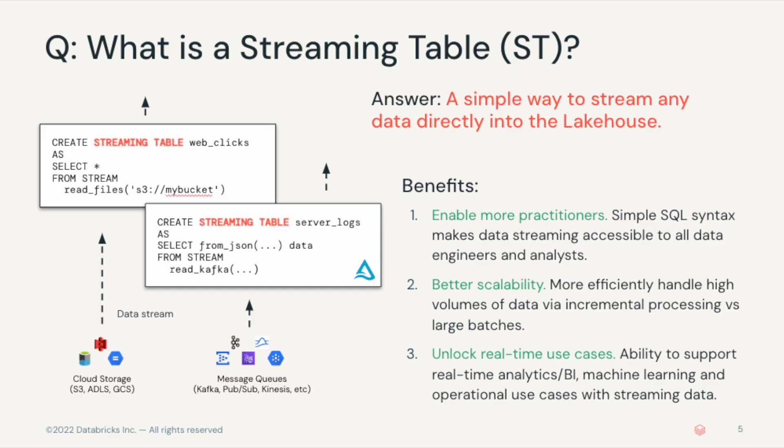A streaming table is a type of table for ingesting and processing streaming data into the lake house architecture. Streaming tables have the ability to support real-time analytics and BI as well as machine learning and operational use cases with streaming data. They can also efficiently handle high volumes of data via incremental processing versus large batches. And with simple SQL syntax, it makes data streaming accessible to all data engineers and analysts.